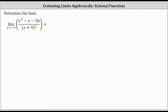Sometimes when we have a rational function, we can simplify the rational expression so that we can then determine the limit by performing direct substitution. In this case, that won't happen because the square of x plus nine doesn't equal x squared minus x minus 56.